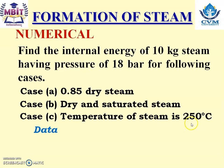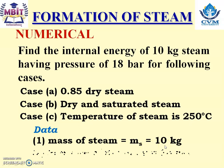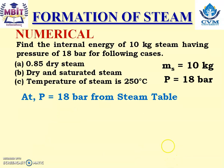Case C has a steam temperature of 250 degrees Celsius, which will be superheated steam. We compare the given steam temperature with the saturation temperature from the steam table. The data given is: mass of steam = 10 kg, pressure = 18 bar. From the steam table at 18 bar, we need to extract relevant properties.